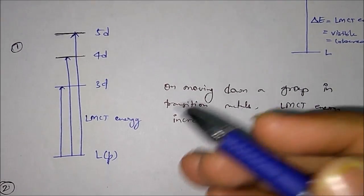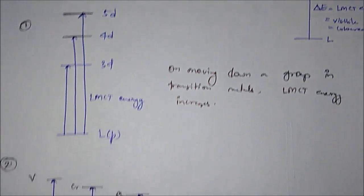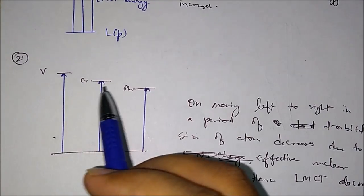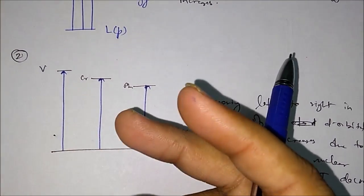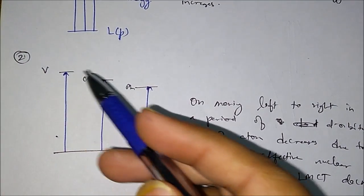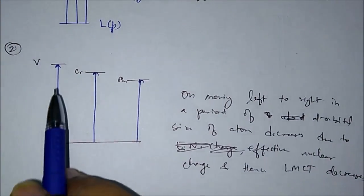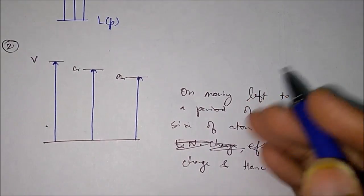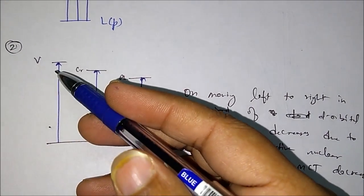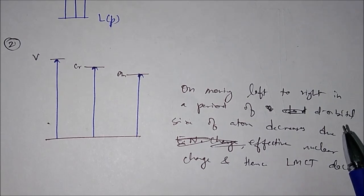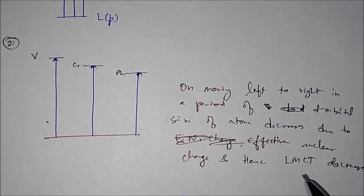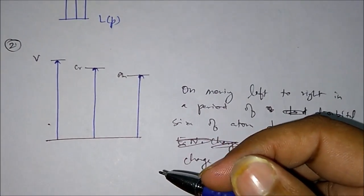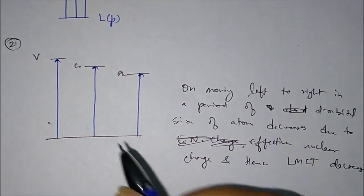Similarly, when you move from left to right in a period - say from vanadium to chromium to manganese - the effective nuclear charge increases and the size of the shell decreases. So the orbital energy will decrease: for vanadium it will be at a certain level, for chromium it will come down a bit, and for manganese it will come down even more. Therefore the LMCT value will decrease. So when moving from left to right in a period, the LMCT decreases. Remember that in both cases the ligand should be the same so that you can compare when the metal is changed.